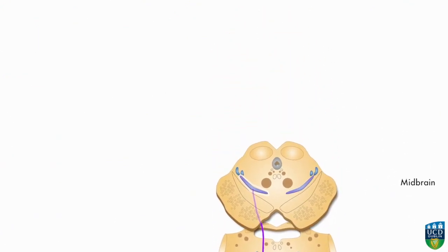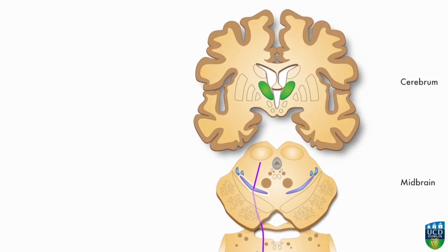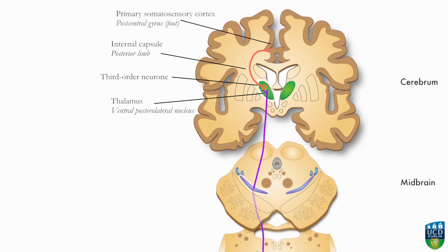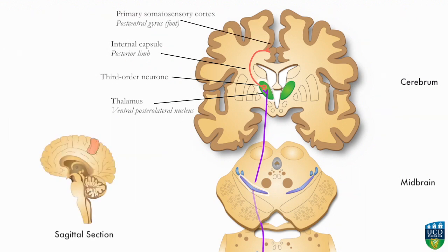From the midbrain, the second order neuron carries the impulse to the thalamus, where it terminates by synapsing with the third order neuron. The third order neuron then carries the impulse to the appropriate area of the primary somatosensory cortex.